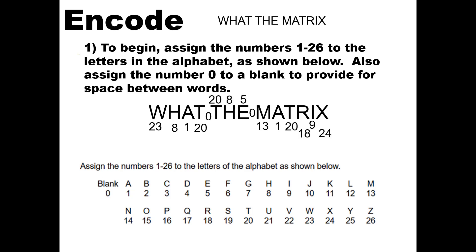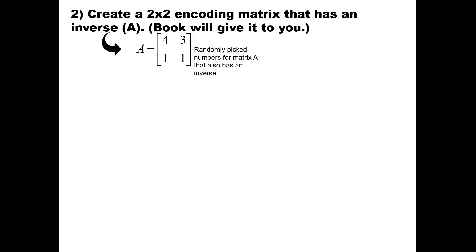Now we need to create a 2 by 2 encoded matrix that has an inverse. Usually the book or the question will give it to you. Now how do they find it? Well, they just randomly pick numbers for matrix A that also has an inverse. So we're going to use this matrix A for this question.